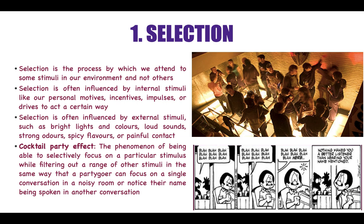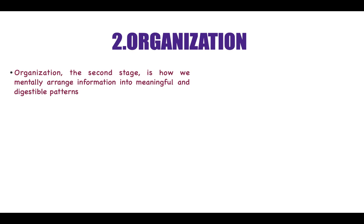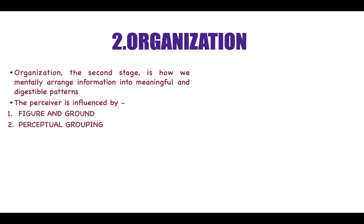Once you select the information — the object, event or person — you then have to organize all that data into meaningful categories, into a meaningful picture. Organization, the second stage, is how we mentally arrange information into meaningful and digestible patterns. The perceiver here is influenced by the figure and ground approach and by perceptual grouping.